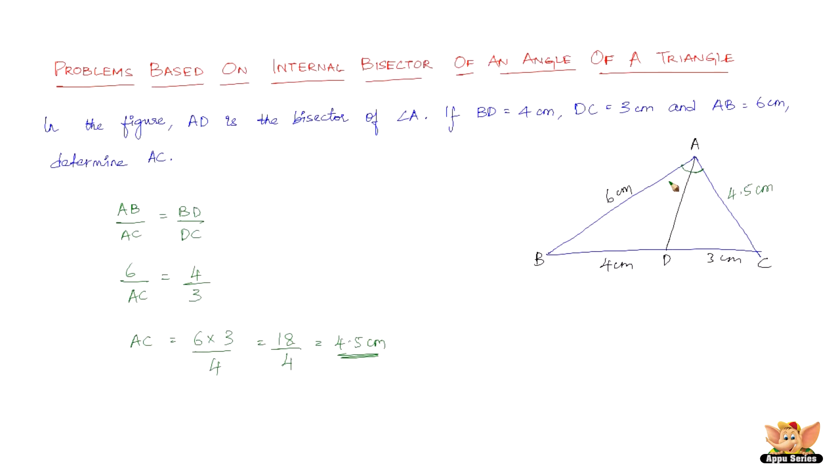The property used is again just for a quick recall. If a line bisects an angle then it bisects the opposite side of the angle in the ratio of the other two sides containing the angle. Let's quickly solve another problem.